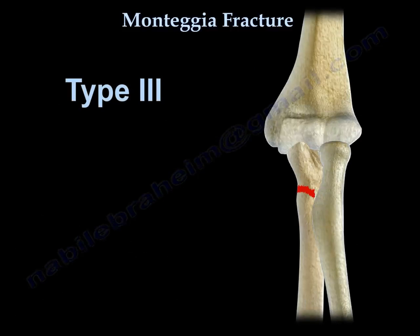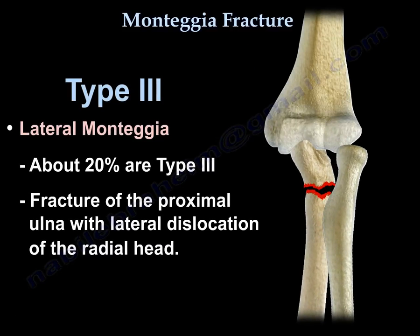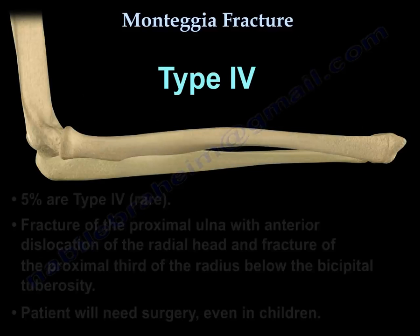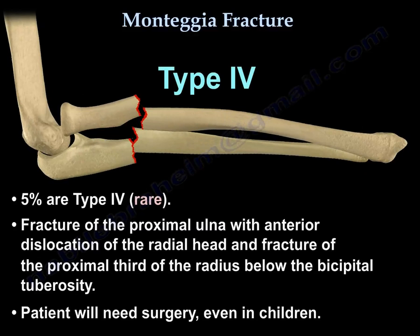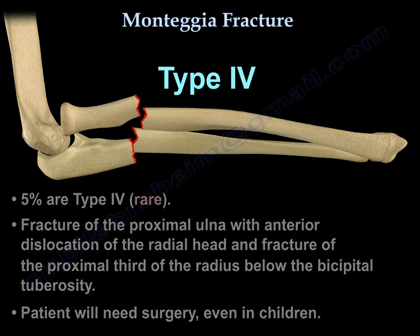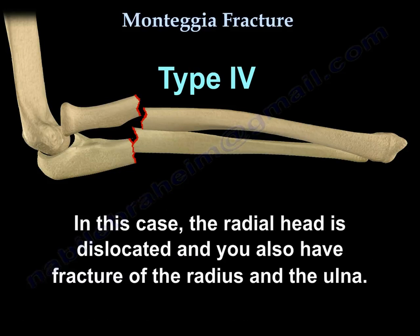Type 3 is lateral Monteggia, about 20% of cases: fracture of the proximal ulna with lateral dislocation of the radial head. Type 4 is a rare type, about 5%: fracture of the proximal ulna with anterior dislocation of the radial head, plus fracture of the proximal third of the radius below the bicipital tuberosity. The patient will need surgery, even in children, as the radial head is dislocated and there are fractures of both the radius and the ulna.